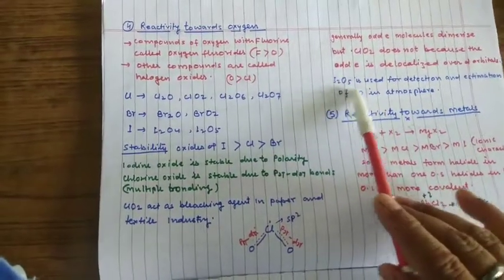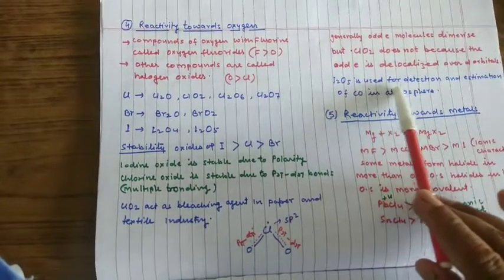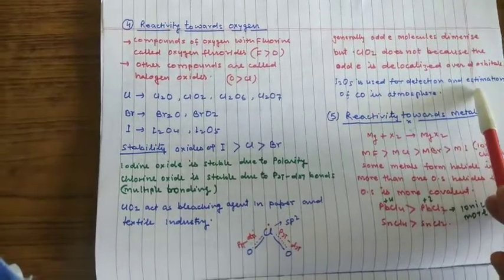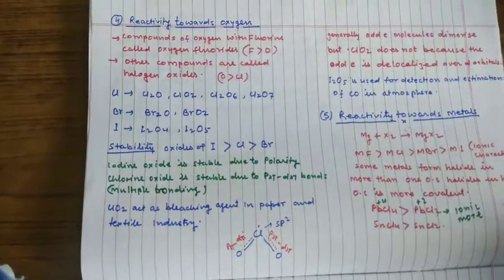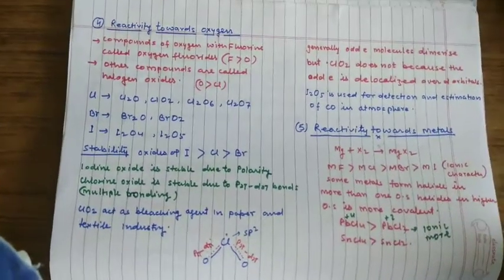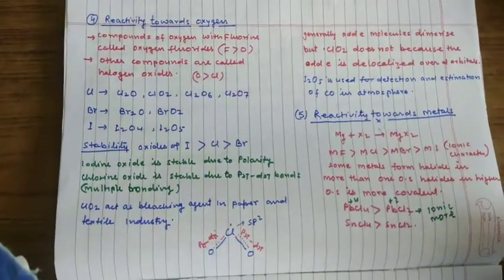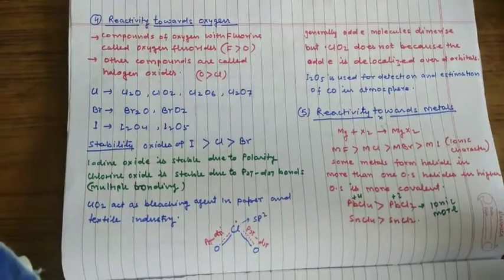I2O5, iodine pentoxide is used for detection and estimation of carbon monoxide in atmosphere and also it is used in the estimation of oxygen present in organic compound.